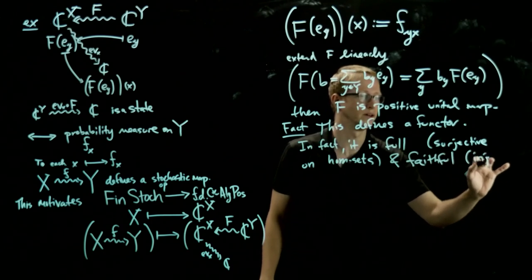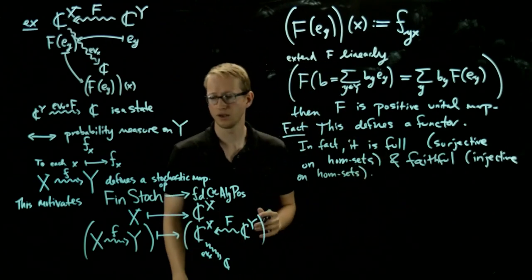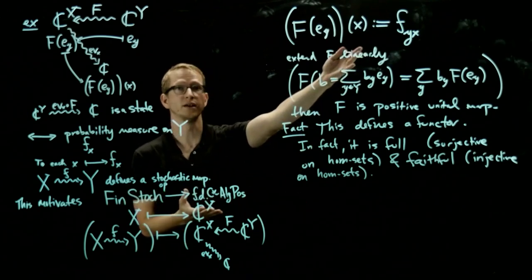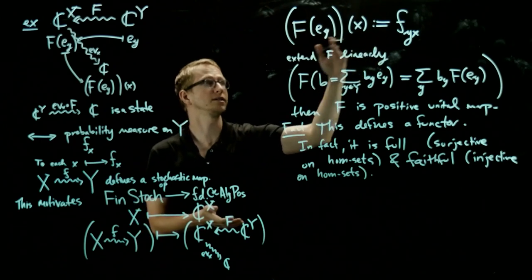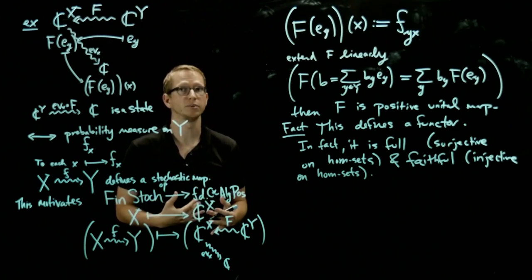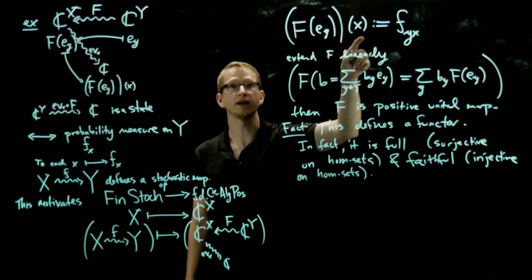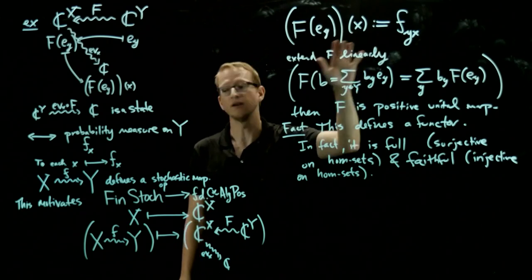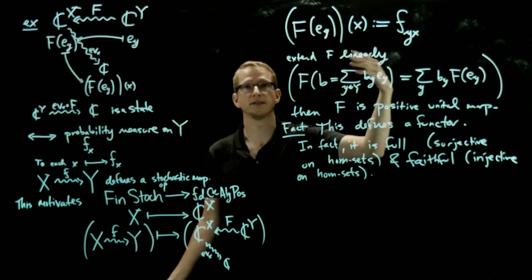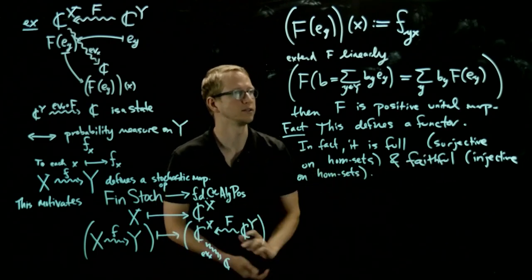The question is, why is it injective? That basically says: if we have two stochastic maps and apply this functor to get associated positive maps, if those two positive unital maps are equal, then the two stochastic maps had to be equal to begin with. This is easy to see from the formula because if we had two different stochastic maps, there would exist at least one pair x, y where f(y,x) ≠ g(y,x). Therefore it's a faithful functor.